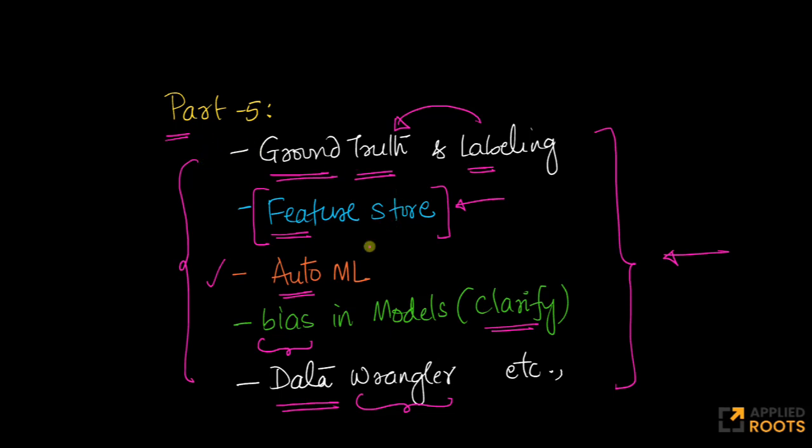Some of these concepts are general in the sense that they are not specific to SageMaker, but SageMaker has specific components. For example, SageMaker Clarify helps ensure models are not biased. Similarly, Data Wrangler helps you pre-process or wrangle data.